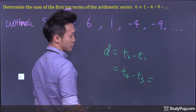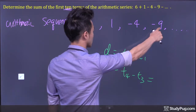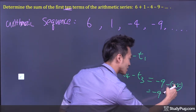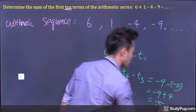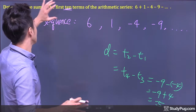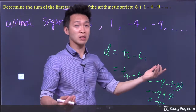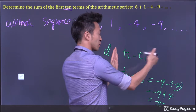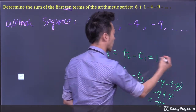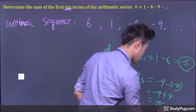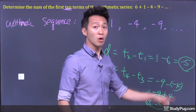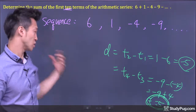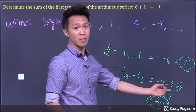Let's go term 4 minus term 3: negative 9 minus negative 4. Negative 9 minus negative becomes plus, so plus 4 gives negative 5. To double-check, term 2 minus term 1: 1 minus 6 also gives negative 5. As long as we have a common difference between each successive term, we have an arithmetic sequence. So the common difference is negative 5.